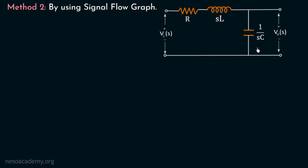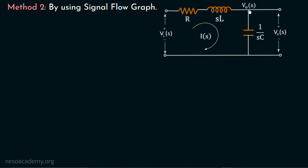To do so, we have to calculate the branch current equation and the node voltage equation. Let us assume the current in this loop equal to I(S), as the current in these three elements will be the same. Moreover, the output voltage Vout(S) is measured across the capacitor, and hence the voltage at that particular node will be Vout(S). Now we have to write equations for this branch current I(S) and this node voltage Vout(S). Let us first write the equation for the branch current I(S).